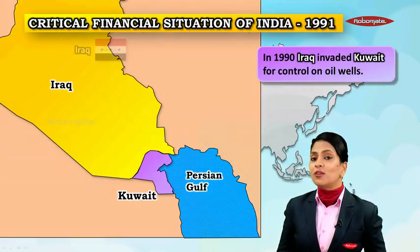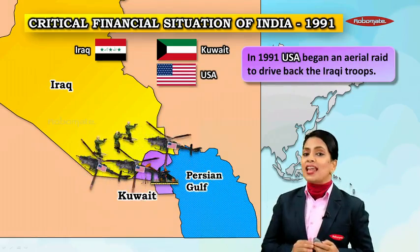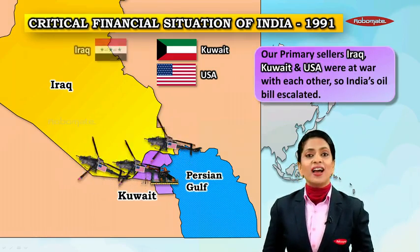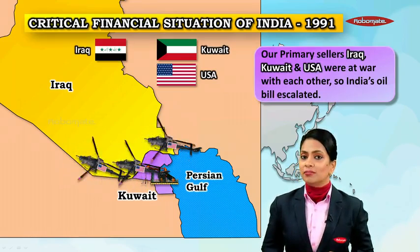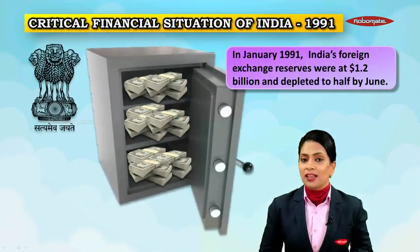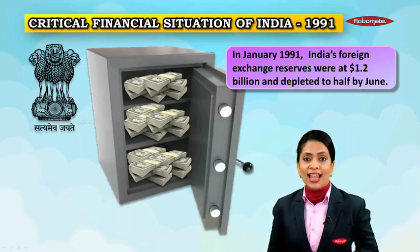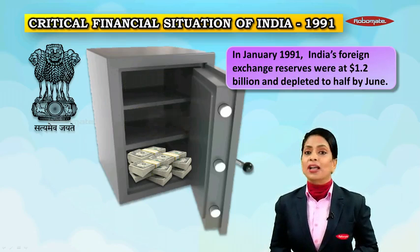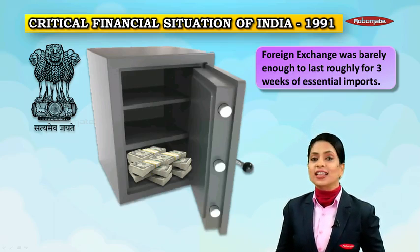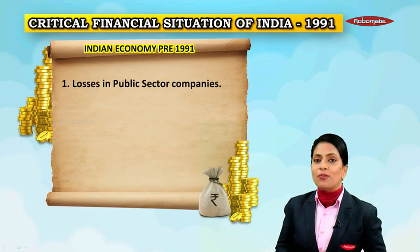After 1991, USSR disintegrated into Russia and 14 different countries, so our export earnings fell. In 1990, Iraq invaded Kuwait for control of oil wells, and in 1991 the US began an aerial raid to drive back Iraqi troops. Our primary oil sellers — Iraq, Kuwait, and the USA — were at war with each other, and this definitely impacted the Indian economy because our oil bills escalated. By January 1991, our forex reserves were only at 1.2 billion dollars, and this depleted to half by June. Our forex was barely enough to last roughly three weeks of essential imports.